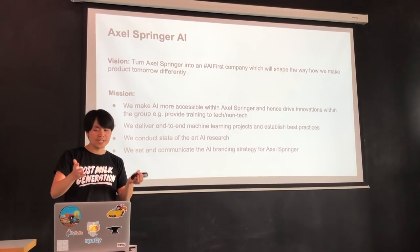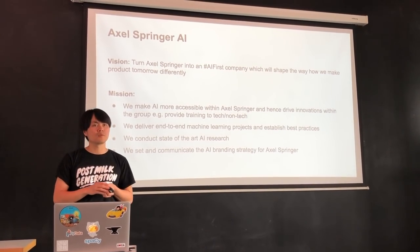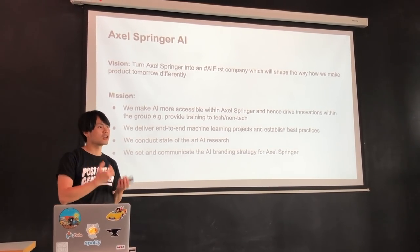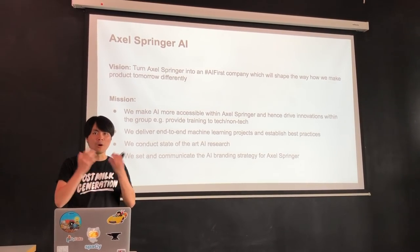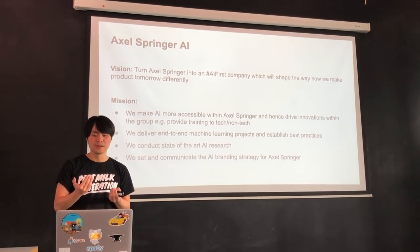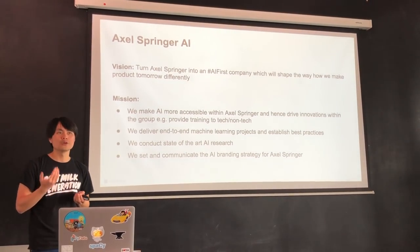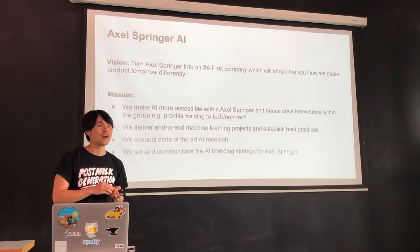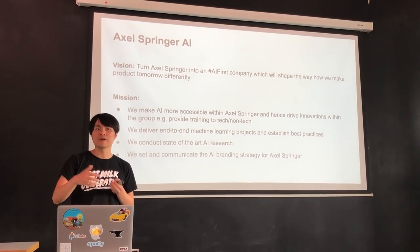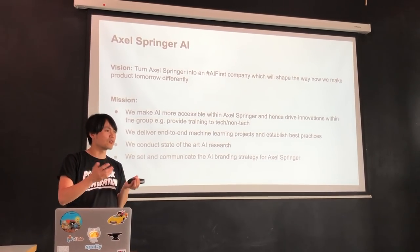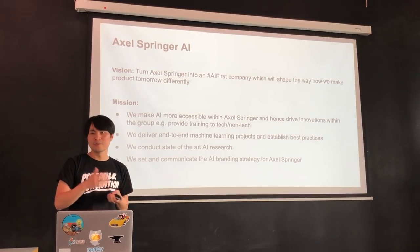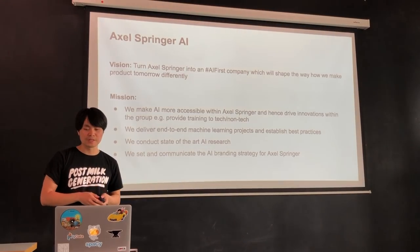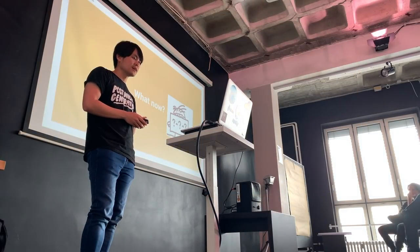We'll also deliver end-to-end products, because transformation also needs a lighthouse team and lighthouse projects. In the future, we want to do state-of-the-art AI research, and also communicate and set a branding for all of us. If you're in Google's ML team, you're part of 'Google AI.' If you're in Amazon's AI team, you're part of 'Amazon AI.' If you're in Facebook, you're part of FAIR. If you're at Zalando Research, you're part of that brand. We need something similar.